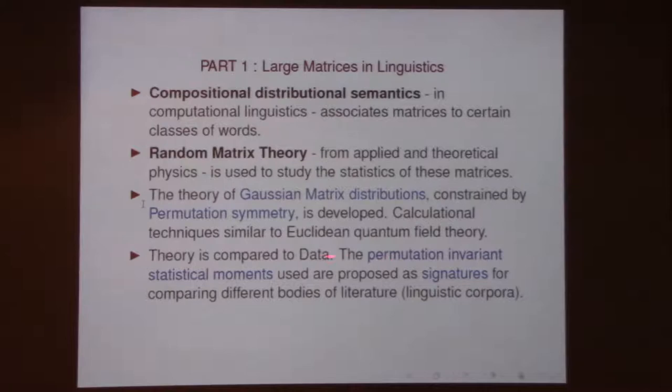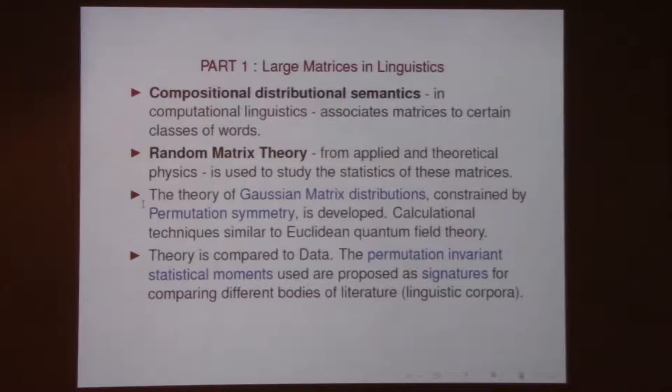What we did in the first paper with the two computer science collaborators was to motivate and develop Gaussian matrix distributions constrained by permutation symmetry. We did some calculations in that model using techniques similar to — in fact, identical to — Euclidean quantum field theory. Statistics, of course, is zero-dimensional quantum field theory, and hence this construction borrows techniques from quantum field theory.